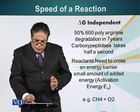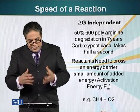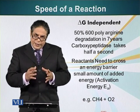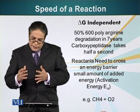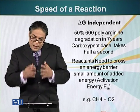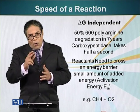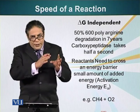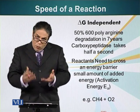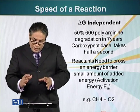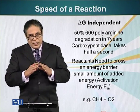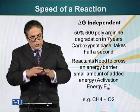There are processes that, although they release energy, do not occur quickly. For example, if we have polyarginine — arginine is an amino acid — 50% of polyarginine will degrade, but it will take 7 years for these amino acids to be released from this polymer. Although we are going from order to disorder and delta G is a minus number, this process is extremely slow. The speed of a reaction is not dependent upon delta G; it depends upon a different entity altogether.